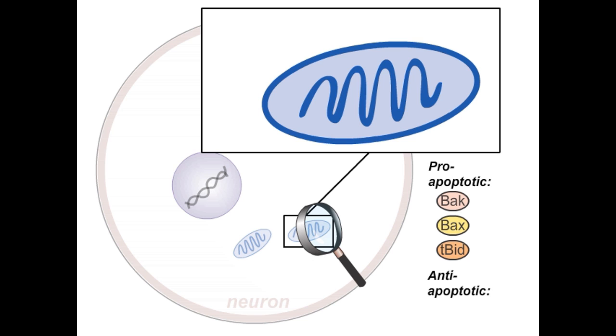Mitochondria contain both pro- and anti-apoptotic proteins that must remain in a delicate balance to control the integrity of the mitochondrial membrane.